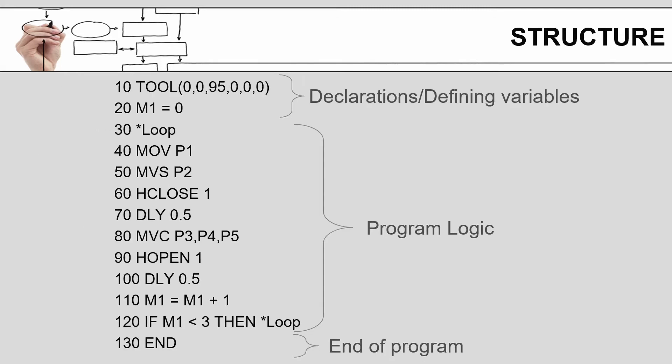Here is an example of a fairly simple program. This was partially pulled from the user manual. The top two lines are where the declarations and definition of variables are. The declaration in line 10 is for the tool, telling how far from the end of the robot arm the tool center point is.